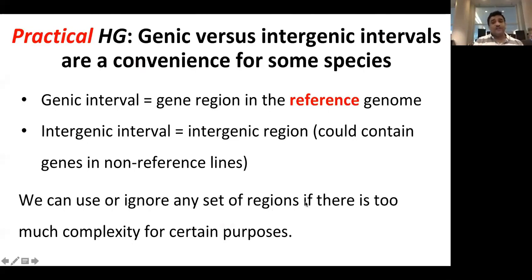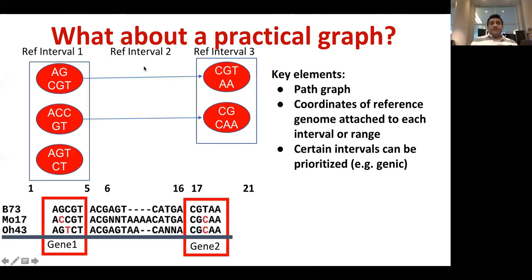If a particular gene interval is very complex, you don't need to worry — you can simply avoid that region. For example, if intergenic regions are highly complex, you can skip them and keep only interval one with its gene and flanking region, and interval three with its gene and adjacent flanking region. You can prioritize these intervals and remove complex intergenic intervals.